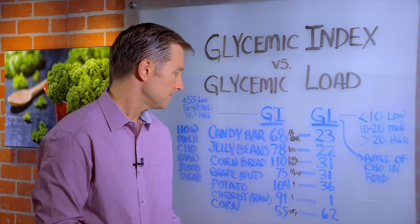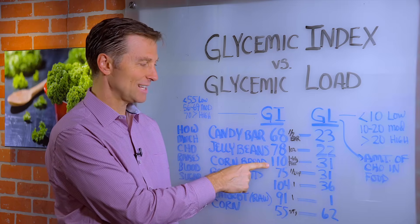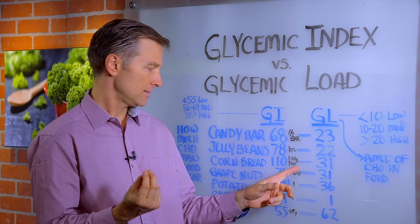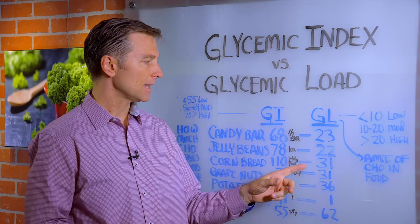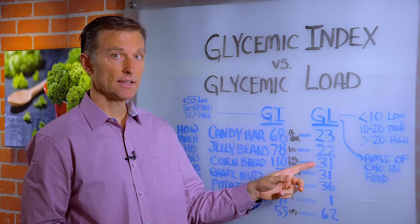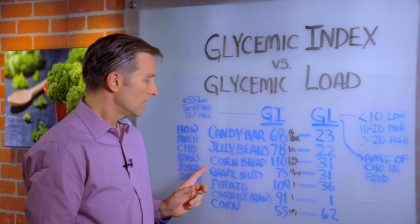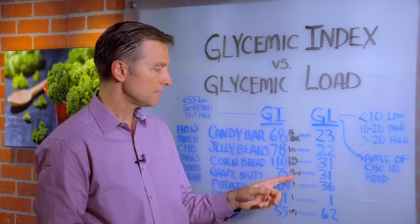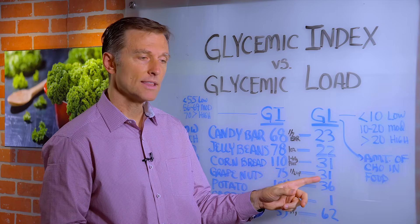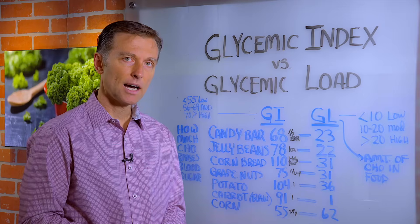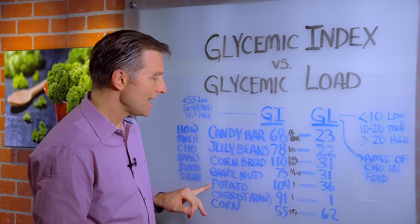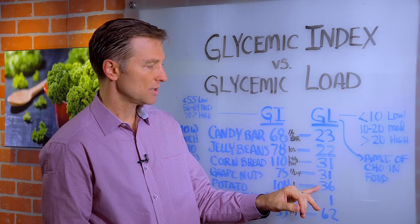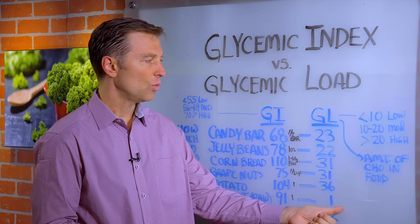There's not a lot of fiber in jelly beans. Cornbread is 110 on the glycemic index — that's off the charts — for a 160-gram piece, with a glycemic load of 31, which is pretty high. Grape Nuts: 75 for half a cup, glycemic load of 31 — you wouldn't think grape nuts would be that high as a cereal, but it's pretty high. A large potato is 104 on the glycemic index with a glycemic load of 36, which is pretty high. A carrot, by contrast, is 91 but has a glycemic load of just one — so that would be fine.